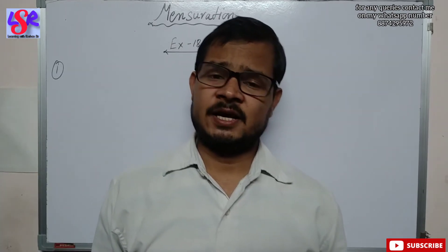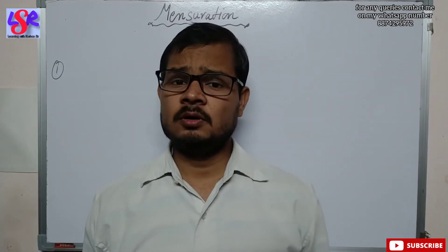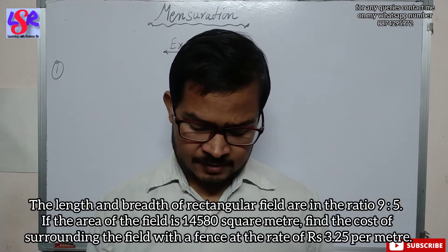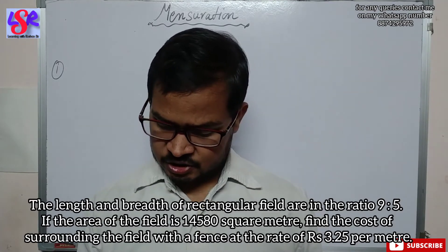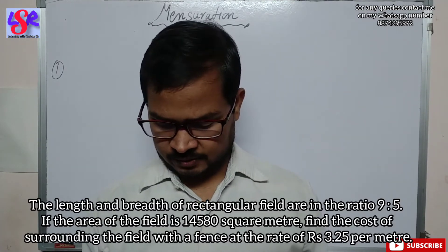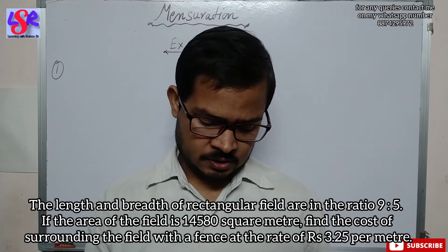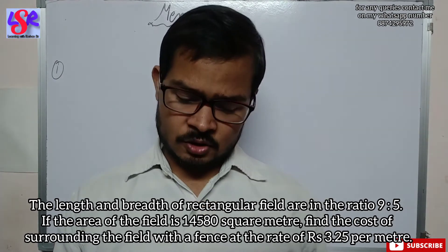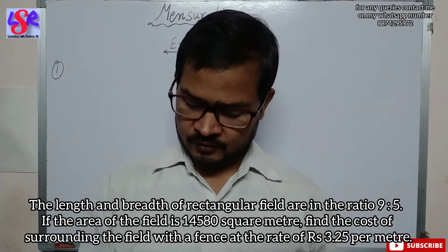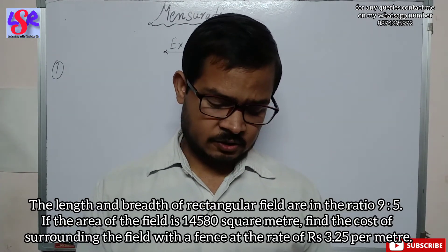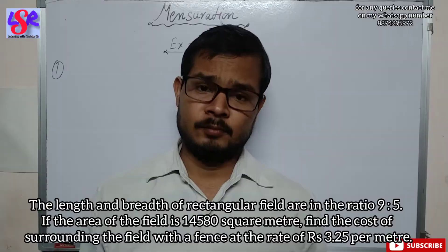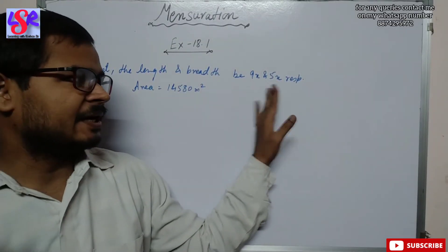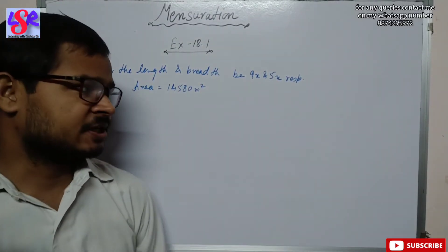Now let's start with the exercise and do question number 1. The length and breadth of a rectangular field are in the ratio 9:5. If the area of the field is 14,580 square meters, find the cost of surrounding the field with a fence at the rate of 3.25 rupees per meter. We take the length and breadth as 9x and 5x respectively.